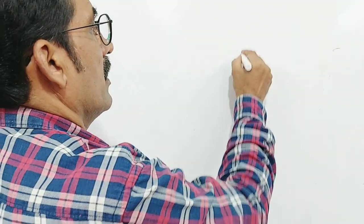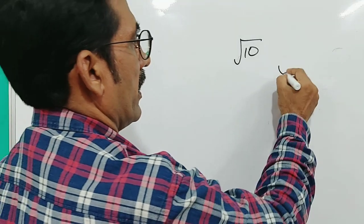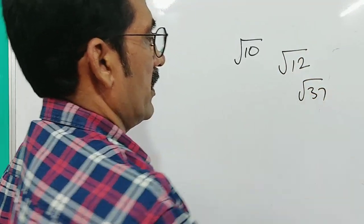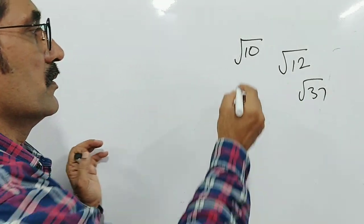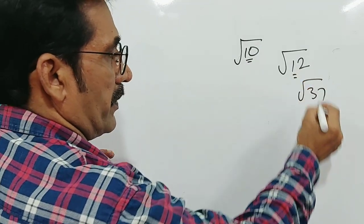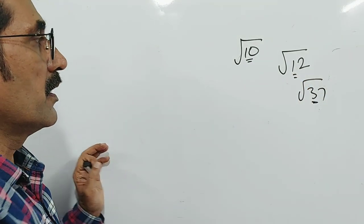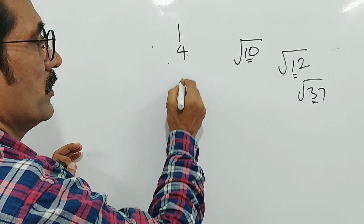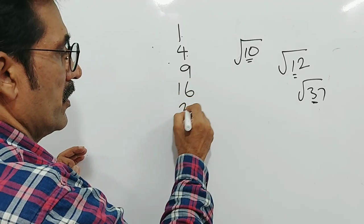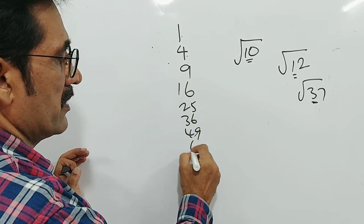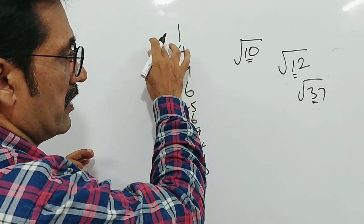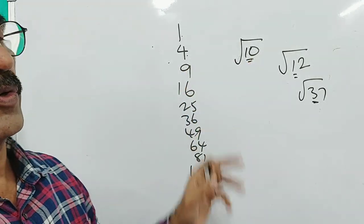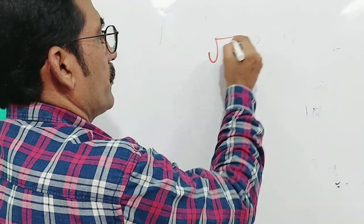Some questions came in: what is the square root of 10, square root of 12, square root of 37? Now, 10, 12, and 37 are not perfect squares. The perfect squares are: 1, 4, 9, 16, 25, 36, 49, 64, 81, 100. But how can we find the square root of a non-perfect square like 10 or 12?